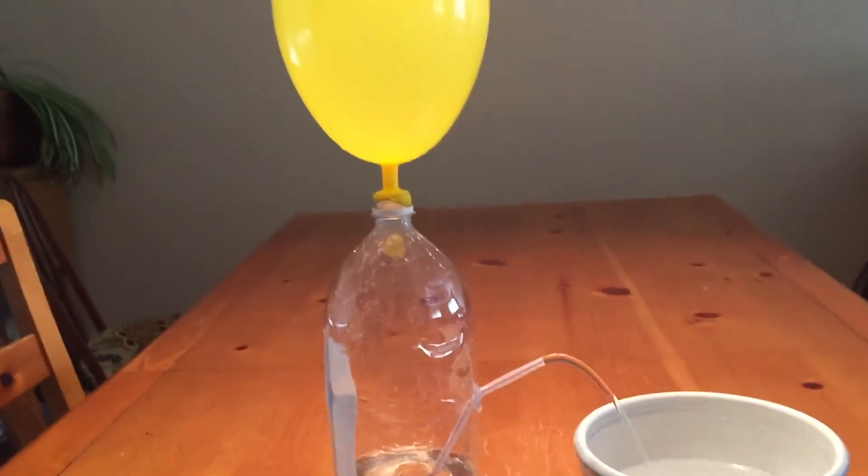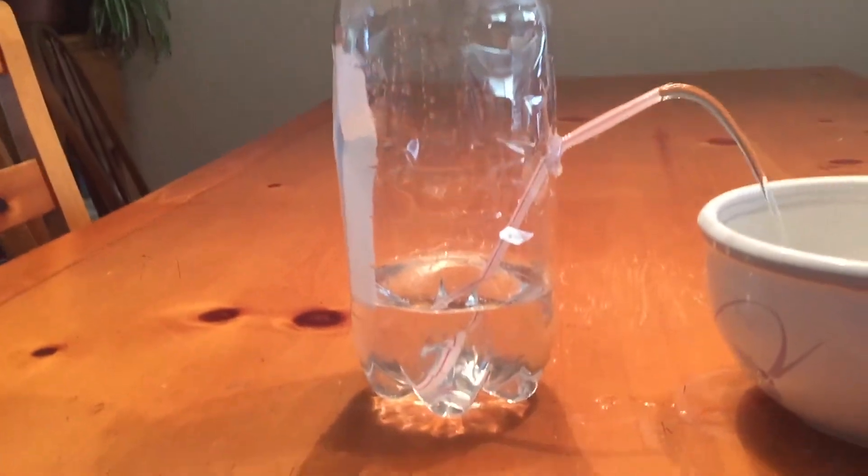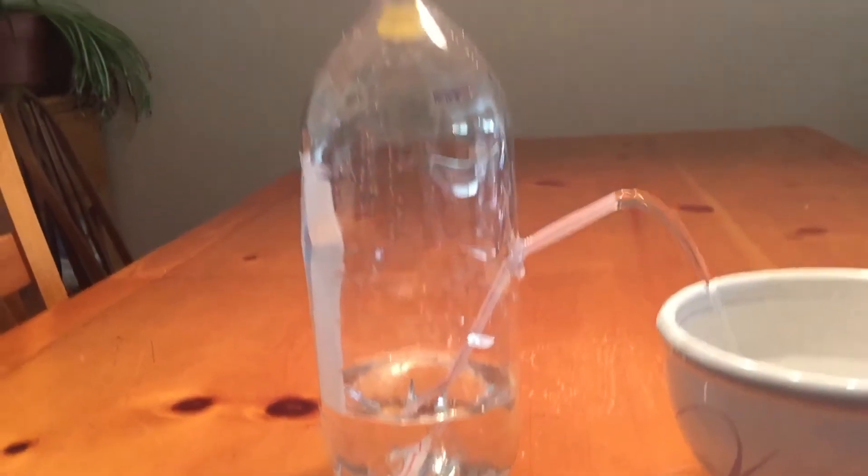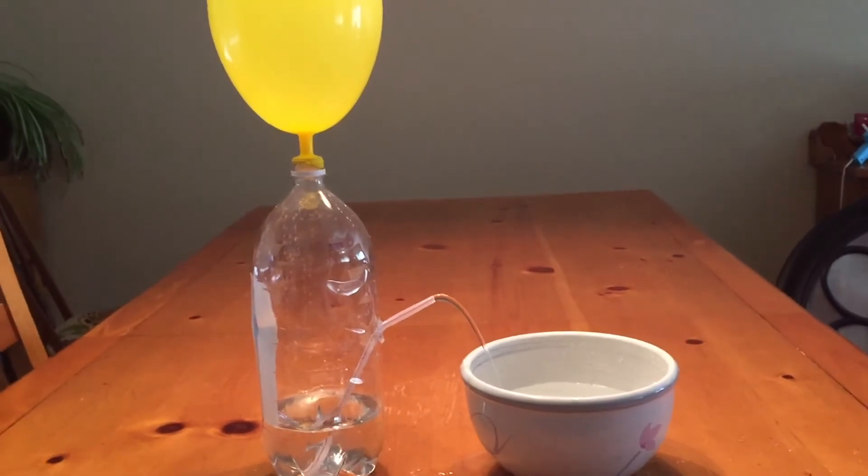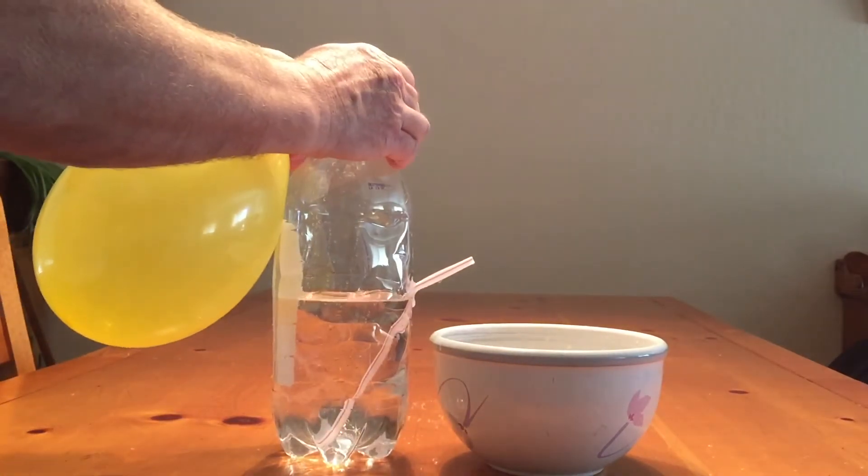So you can make your own drinking fountain if you'd like by putting a clamp on the top or a valve or some kind of clothespin to shut off that air coming through. I hope you enjoyed this video.